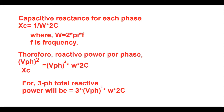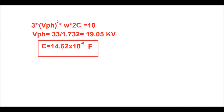We know that capacitive reactance XC = 1/(ω·C), where ω = 2πF and F is the system frequency. Since the equivalent capacitance per phase is 2C, XC = 1/(ω·2C). Reactive power per phase = V_phase² / XC = V_phase² · ω · 2C. For three phases, total reactive power = 3 · V_phase² · ω · 2C. With V_phase = 33kV / 1.732 = 19.05kV and total capacity of 10 MVAR, the capacitance of each unit comes to 14.62 microfarads.